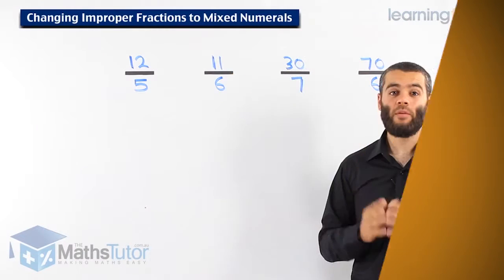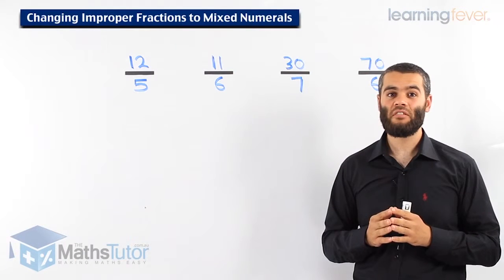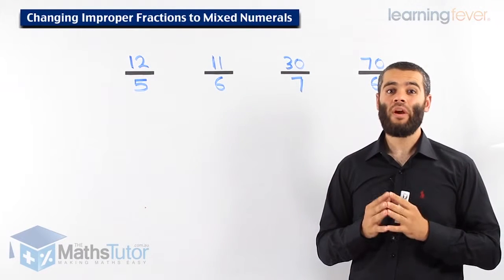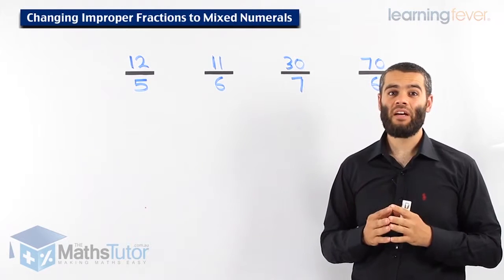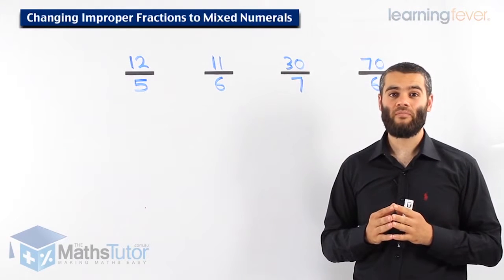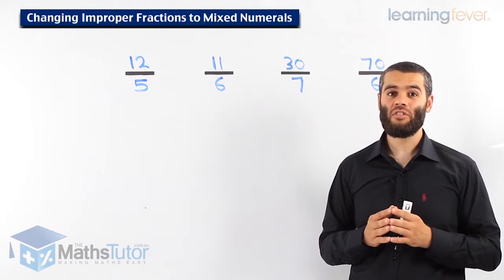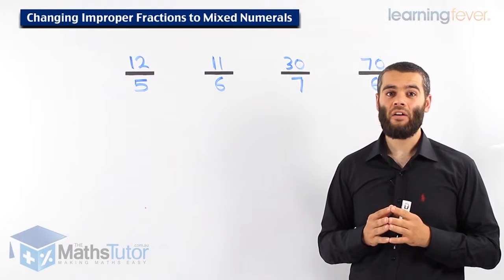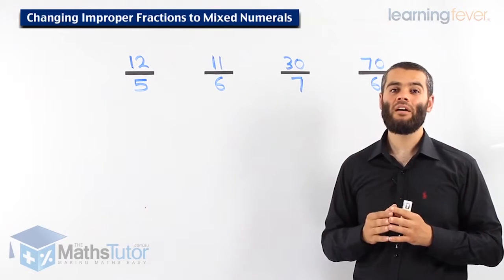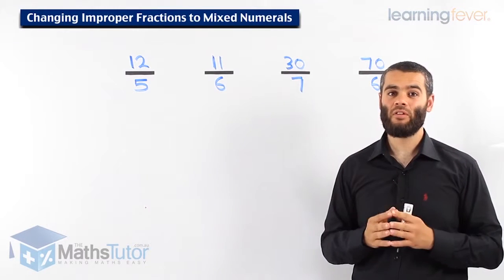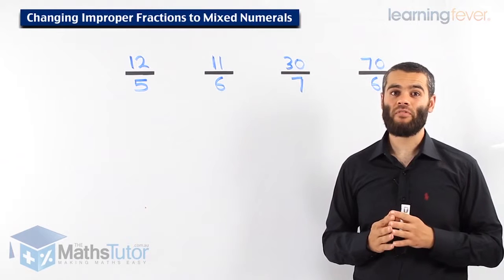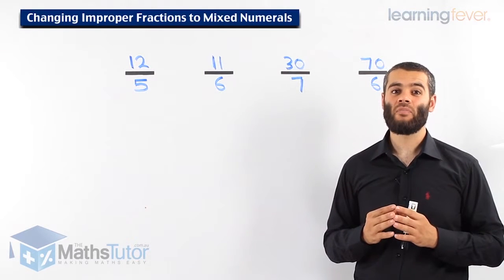Have you heard of improper fractions? They are fractions where the numerator is larger than the denominator. Normally, fractions are where the numerator is smaller than the denominator. So improper fractions are the other way around.